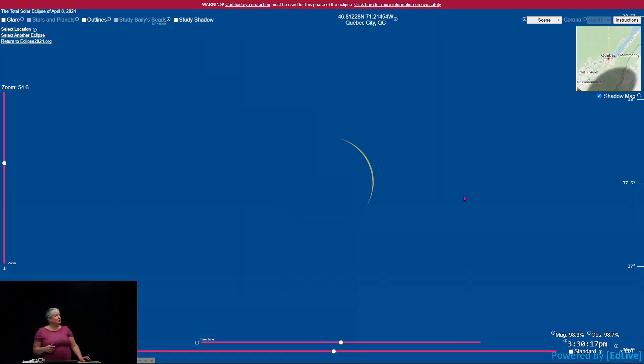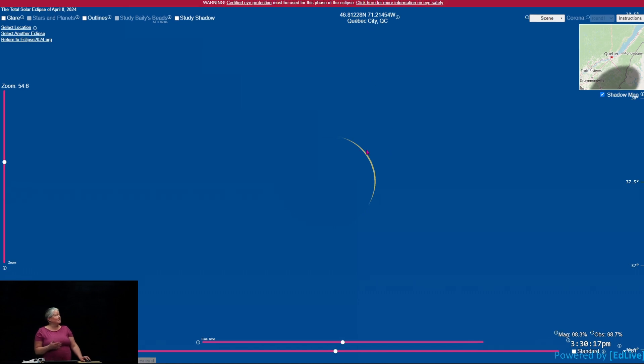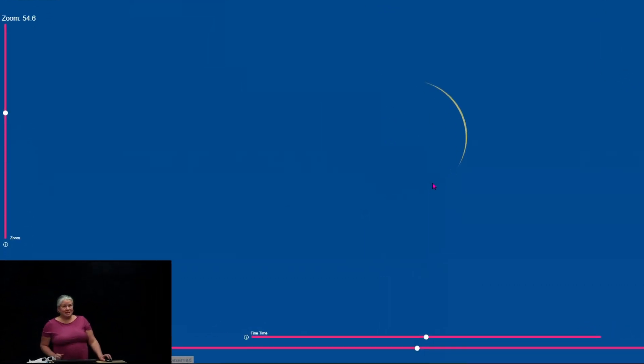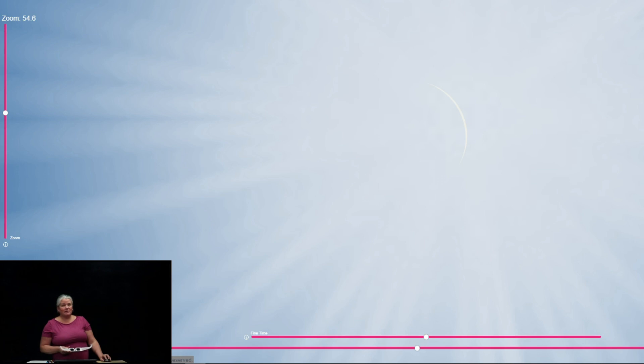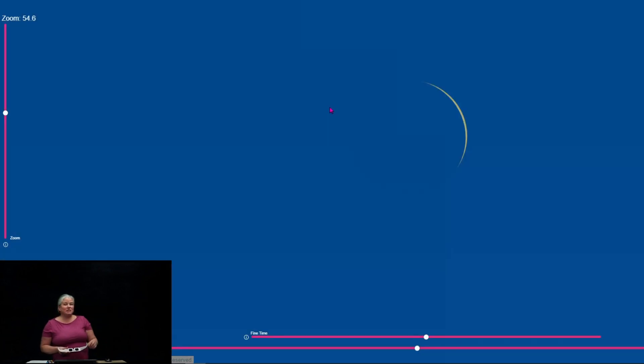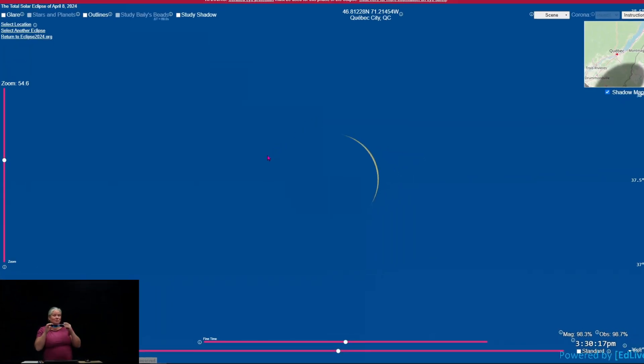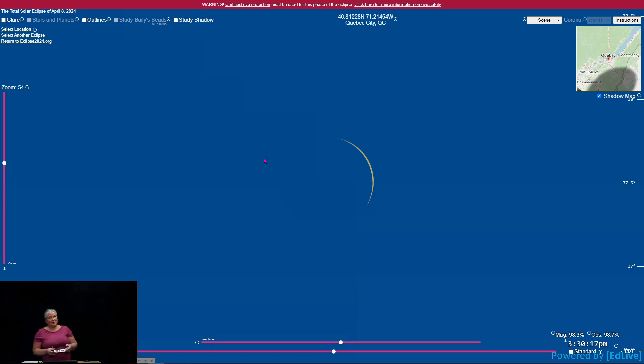Now I want to show you the view from a city not in the region of total eclipse. So this is for Quebec City. And at eclipse maximum, you will see a thin crescent Sun like this. So this is the Sun almost completely covered by the Moon. But there's still enough Sun that it's dangerous for your eyes, and you need to keep your glasses on when you see this. It looks very thin, but in reality, it is quite bright. So if you are in the region of partial eclipse, you will need to keep your glasses on at all times to observe the eclipse.